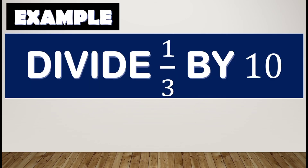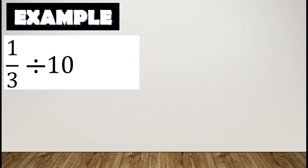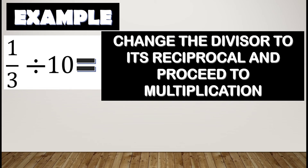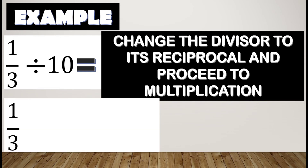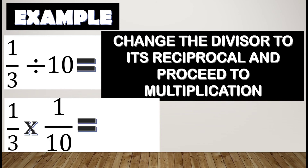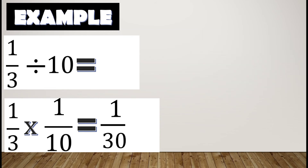Let us be ready with our first example: divide one-third by ten. In dividing fractions by a whole number, all we need to do is to flip our divisor. In this case, the divisor is ten, so we change it to its reciprocal and proceed to multiplication. We write one-third times one over ten, and apply rules in multiplying fractions — numerator times numerator, denominator times denominator. One-third times one-tenth gives us one-thirtieth.